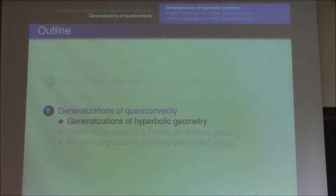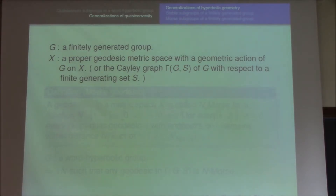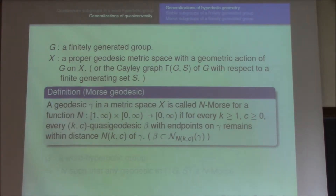Now let's discuss some generalizations of hyperbolic geometry. We have an arbitrary finitely generated group, and X is a proper geodesic metric space with a geometric action of G on X. Here, geometric action means the action is isometric, proper, and co-compact. Or we can think of it as the Cayley graph of G with respect to a finite generating set S. What we do is focus on hyperbolic-like geodesics in X, namely Morse geodesics.